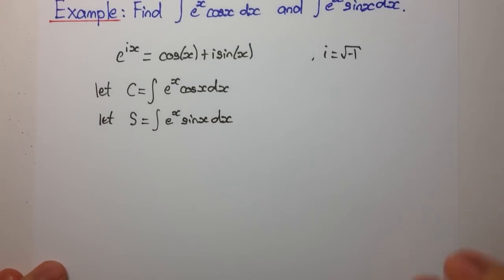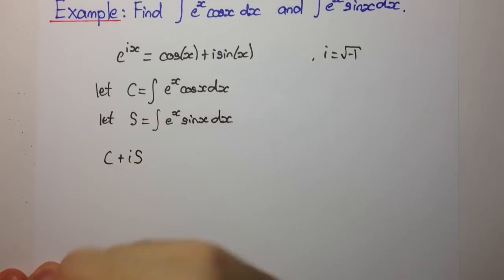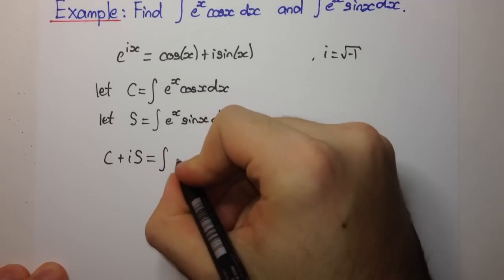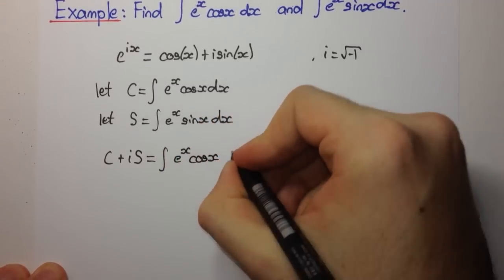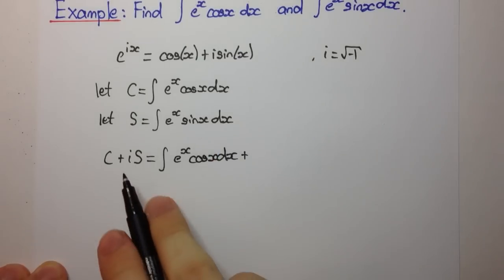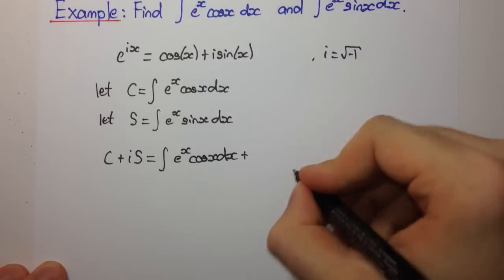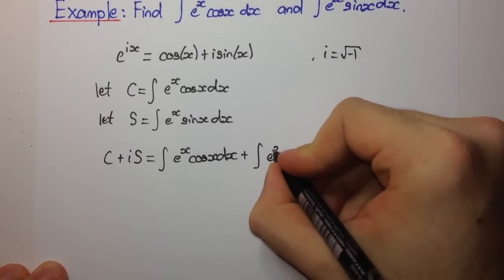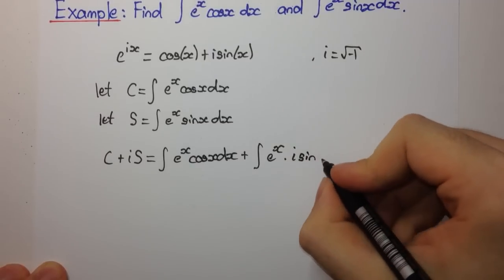Now let's consider C plus i·S. That's going to be the integral of e to the x cos(x) dx plus, since i is just a constant, we can bring that inside our integral, so it's the integral of e to the x times i·sin(x) dx.